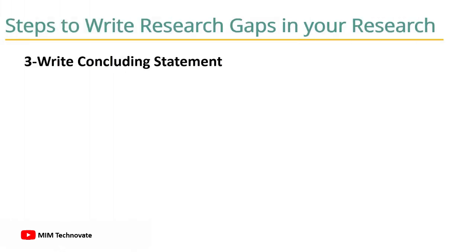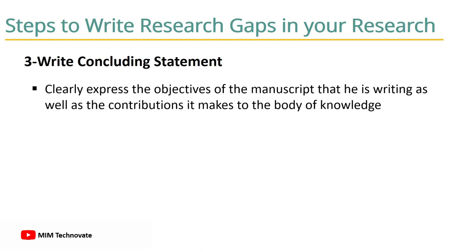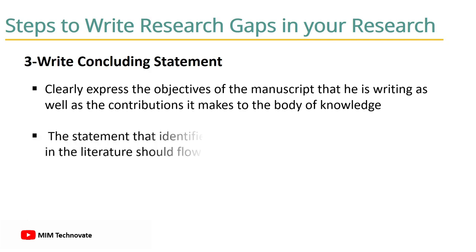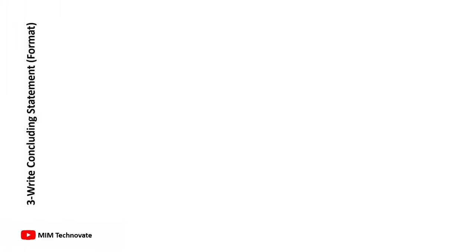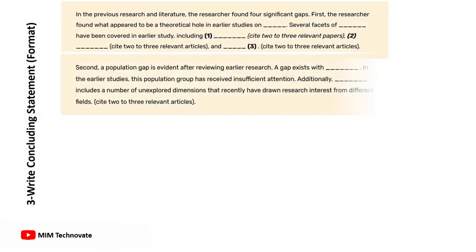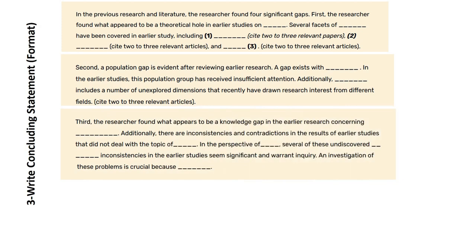Step 3: Write a concluding statement. The researcher must also clearly express the objective of the manuscript being written as well as the contributions it makes to the body of knowledge. The statement that identifies gaps, contradictions, or arguments in the literature should flow logically into this concluding statement.